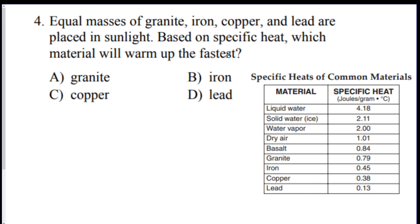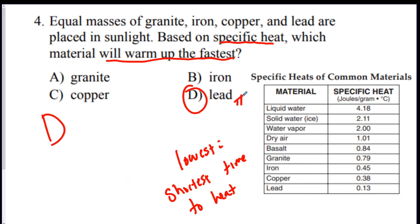Number four. Equal masses of granite, iron, copper, and lead are placed in sunlight. Based on specific heat, which material will warm up the fastest? Remember, the lowest specific heat will take the shortest amount of time to heat. So, your answer to this should have been lead. So, if I were to rank these, lead would win. Lead would be number one. And then, second would be copper. Copper would heat up the second fast. And then, we got iron coming in third at third fast. And then, that means granite would take the longest out of the four.